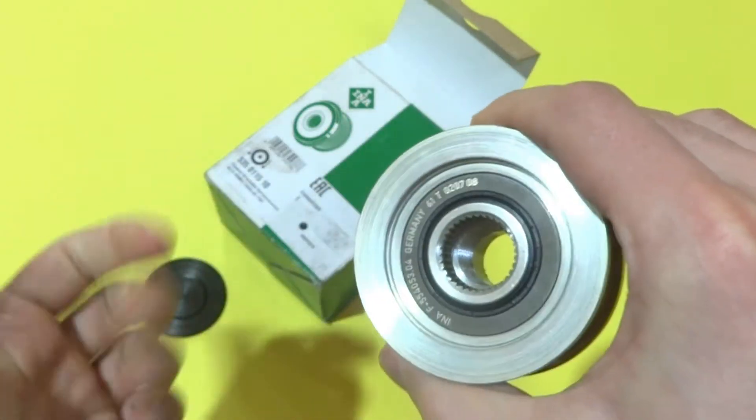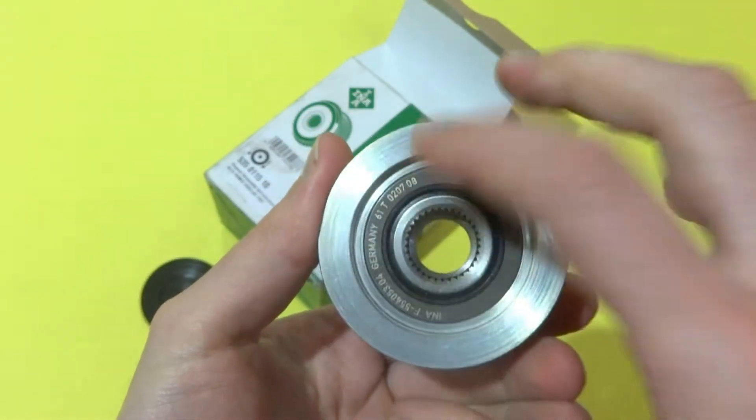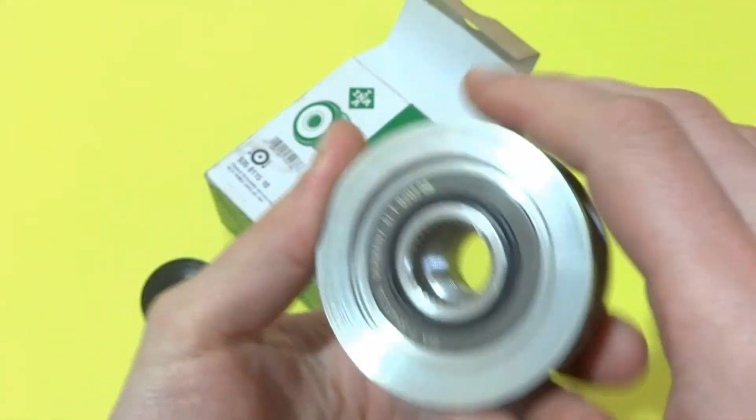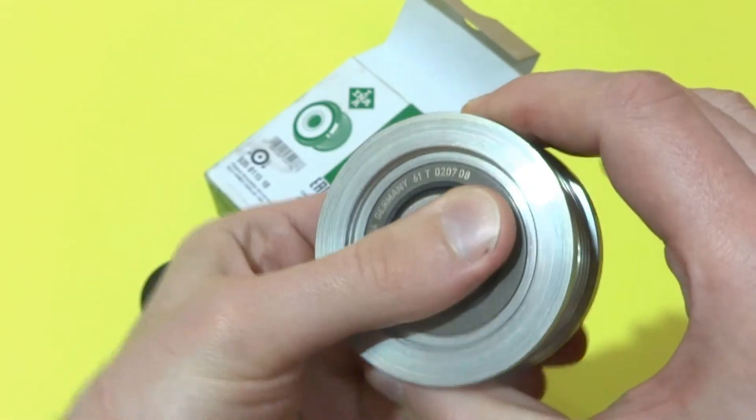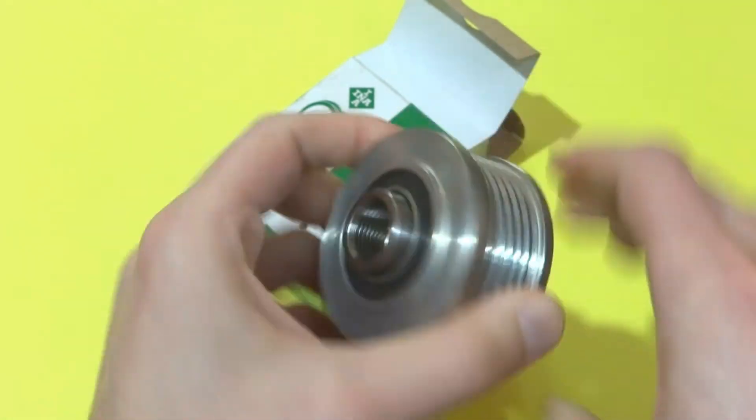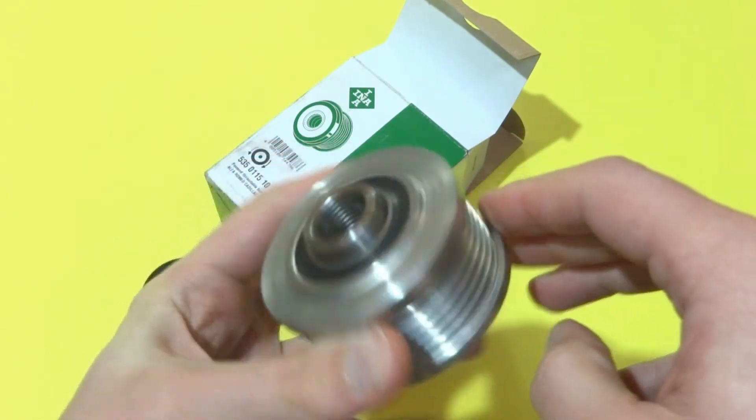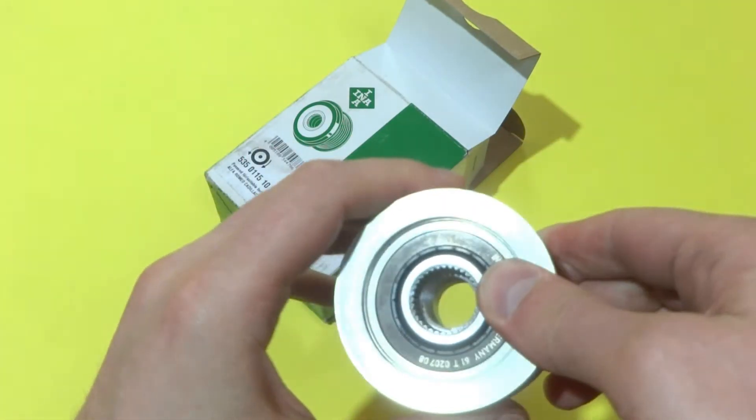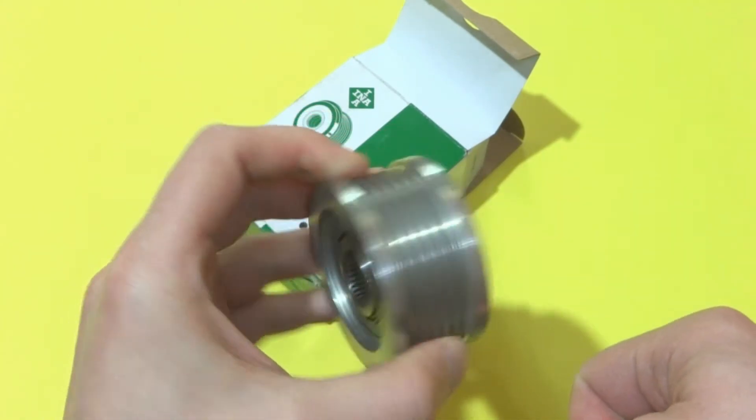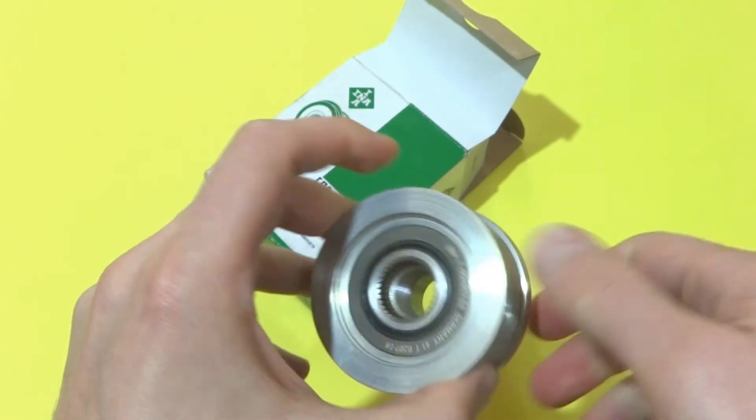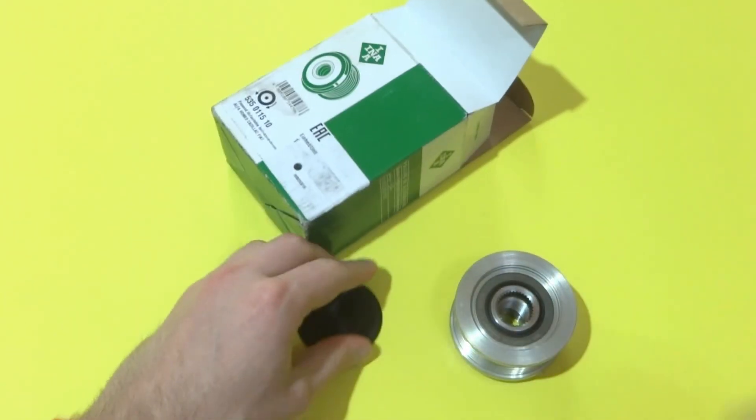So this one, as the name says, has a little clutch inside it, so it can rotate only in one direction. And the idea in this particular part is to match changing engine speeds with the rotational speeds of the alternator. So that's it.